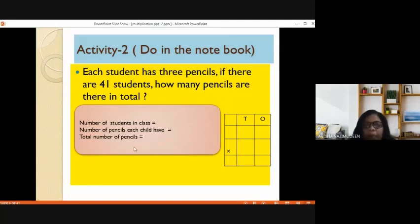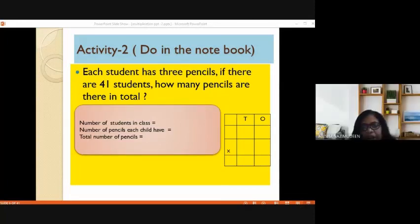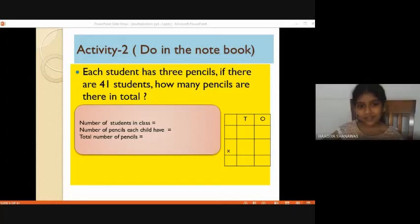Then, total number of pencils. How will you find total number of pencils? How will you find? You need to multiply it with? Multiply with, multiply. Multiply. You need to multiply. Which two numbers you need to multiply? 3 and 41.